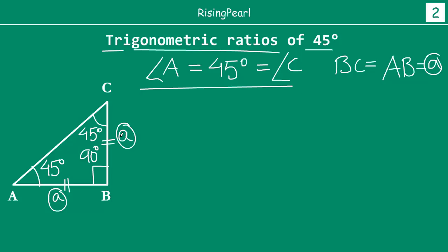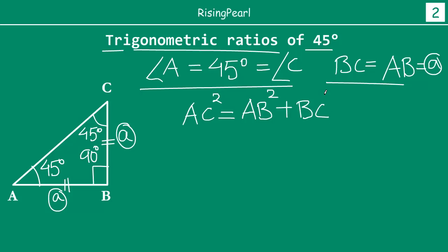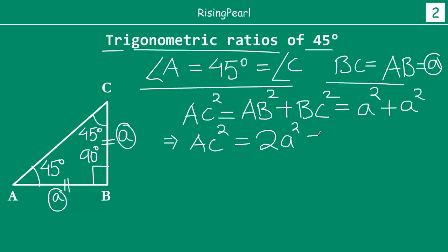So if BC is A, then AB must also be A because we just saw these two are equal. Now applying the Pythagorean theorem in triangle ABC, we know AC squared is equal to AB squared plus BC squared. Now AB is A, so that gives A squared, and BC is also A, so that gives A squared. So AC squared equals A squared plus A squared, which is 2A squared. Taking the square root on both sides, AC equals square root of 2 times A.